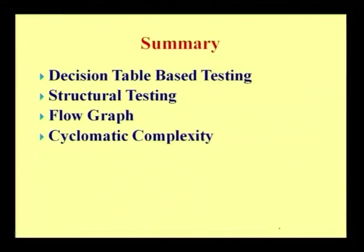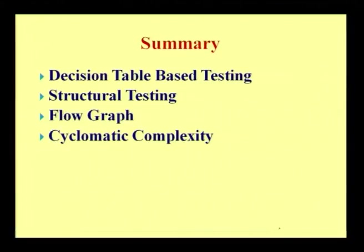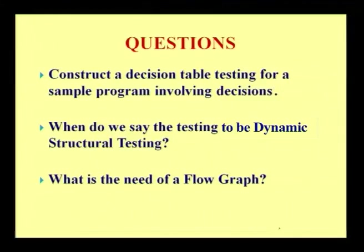In summary, this session covered decision table based testing, where we constructed a confusion matrix as part of black box testing. Then we switched to structural testing as an initiative to white box testing, and mentioned the importance of converting code into a flow graph. Further, we were about to initiate the process of finding the number of independent paths by use of cyclomatic complexity. Some questions for this session: Construct a decision table for a sample program involving decisions. When do we say the testing to be dynamic structural testing? What is the need of a flow graph? Thank you.